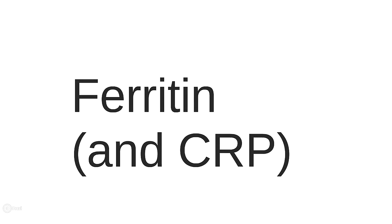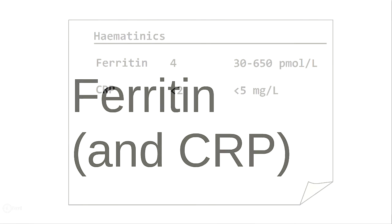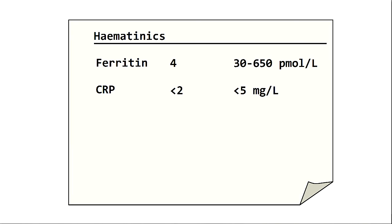Ferritin, which will give you an indication of the available iron stores. It's also worthwhile requesting a CRP, because ferritin as an acute phase protein is raised in inflammatory states — therefore if the CRP is raised, you should interpret the ferritin with caution. You add on a ferritin and CRP: the ferritin is 4, the CRP is less than 2. So his iron is low and we can be confident this is correct as the CRP is normal.